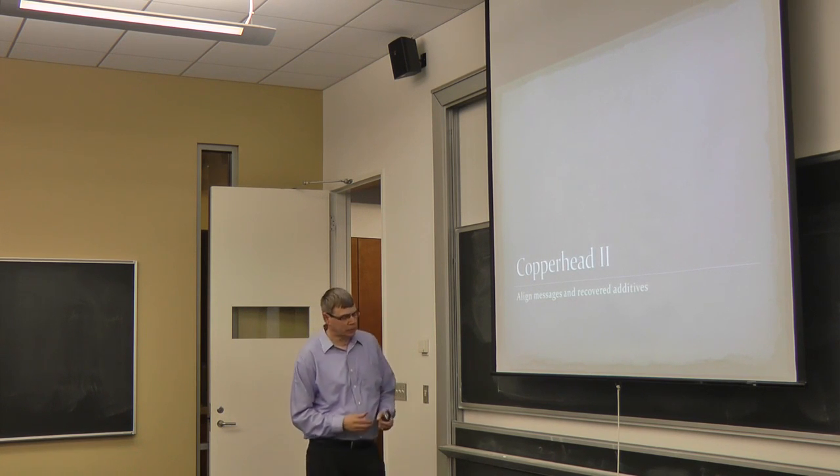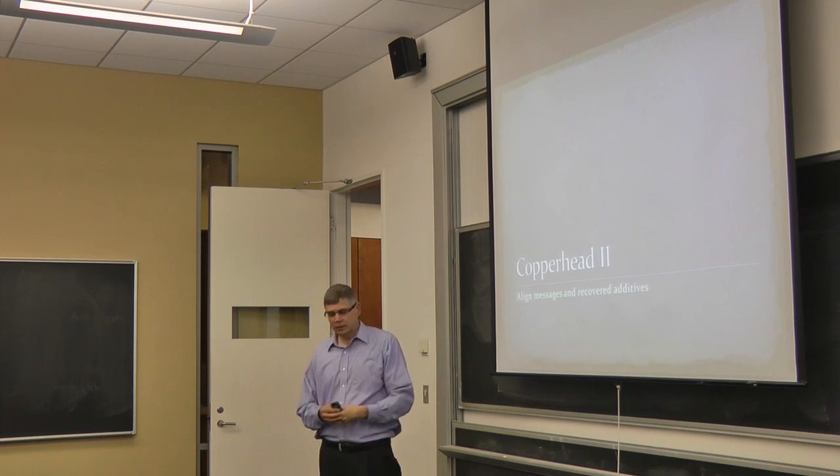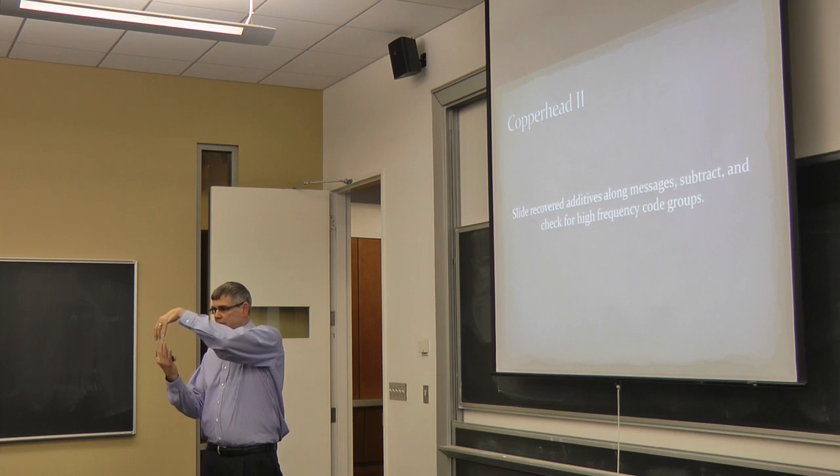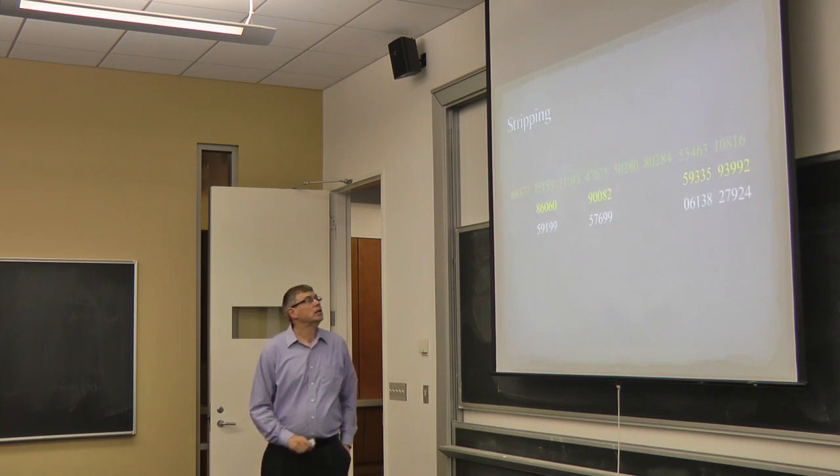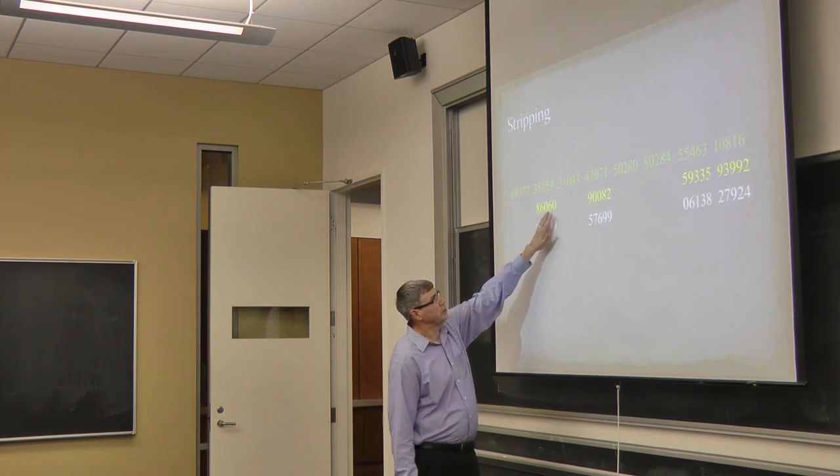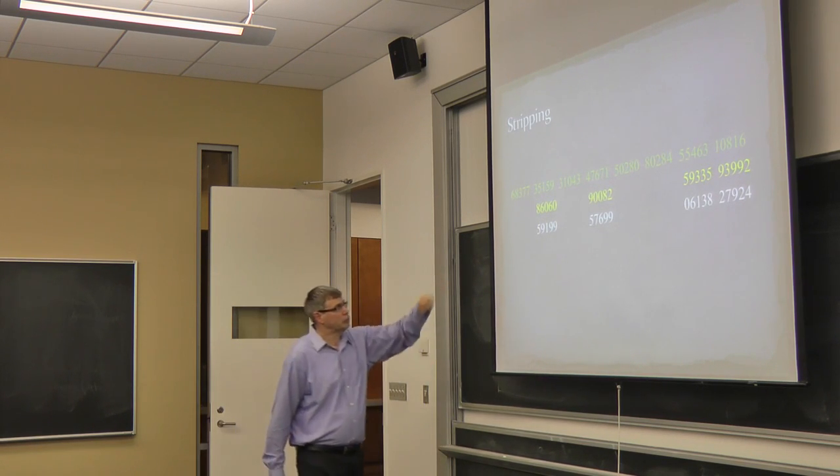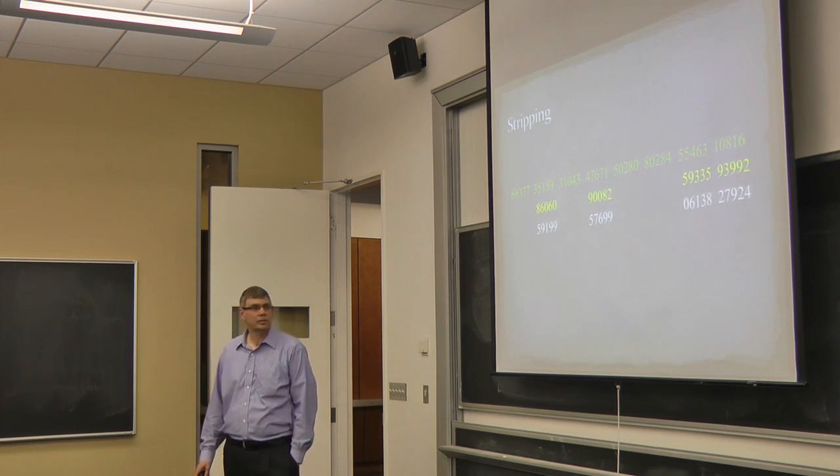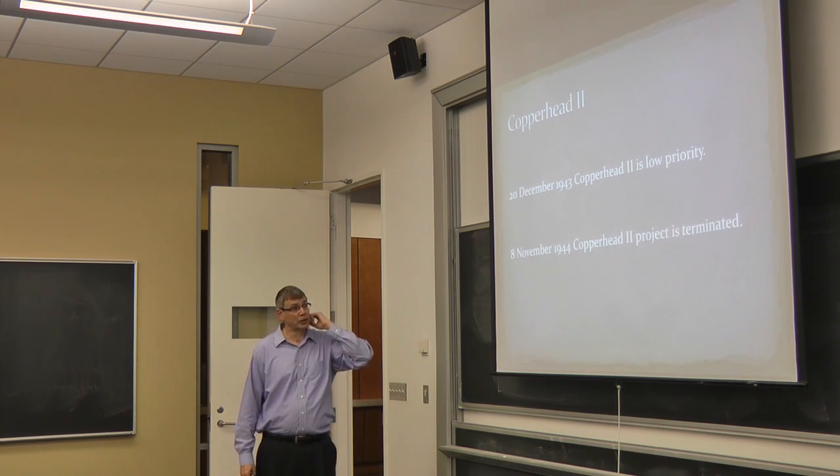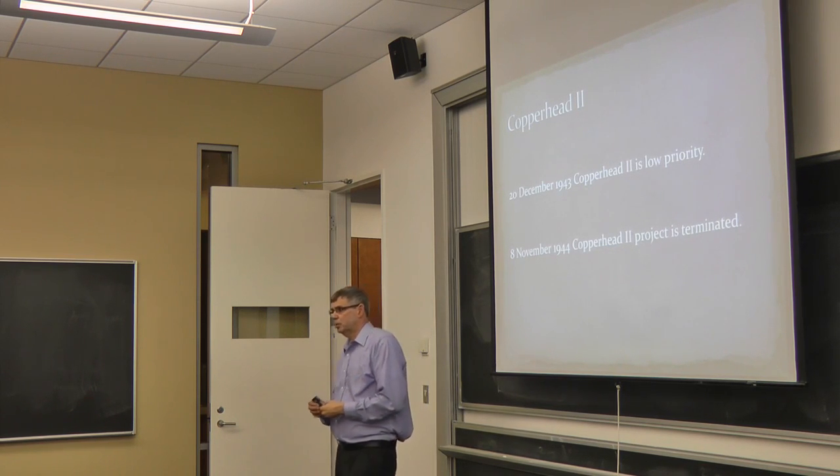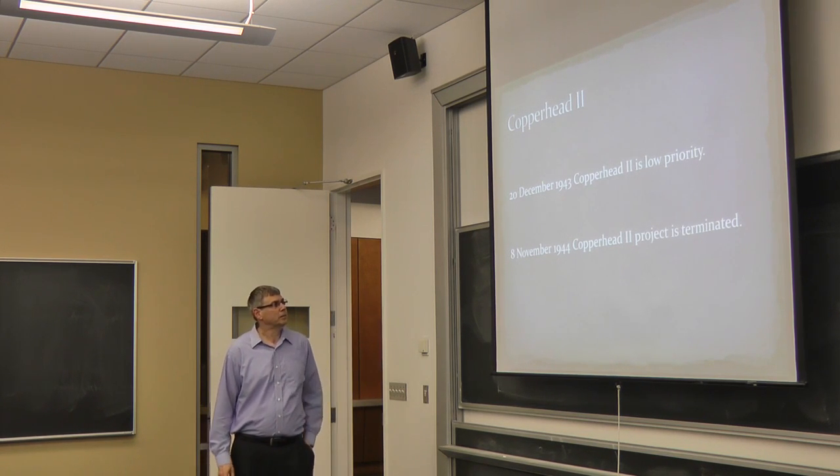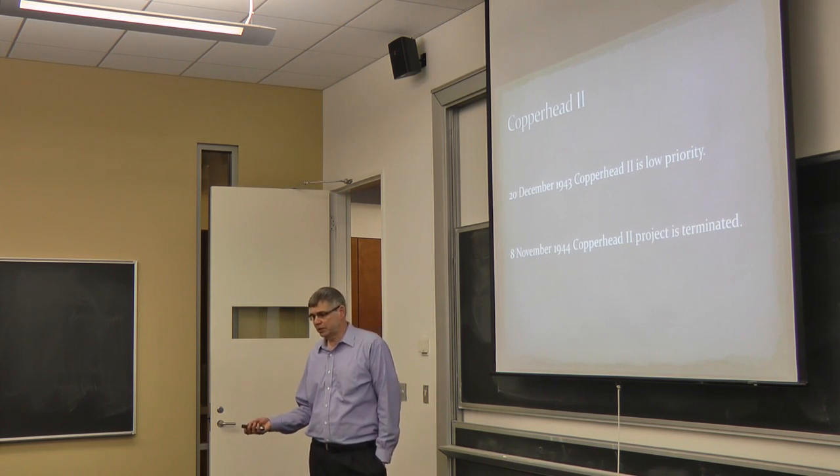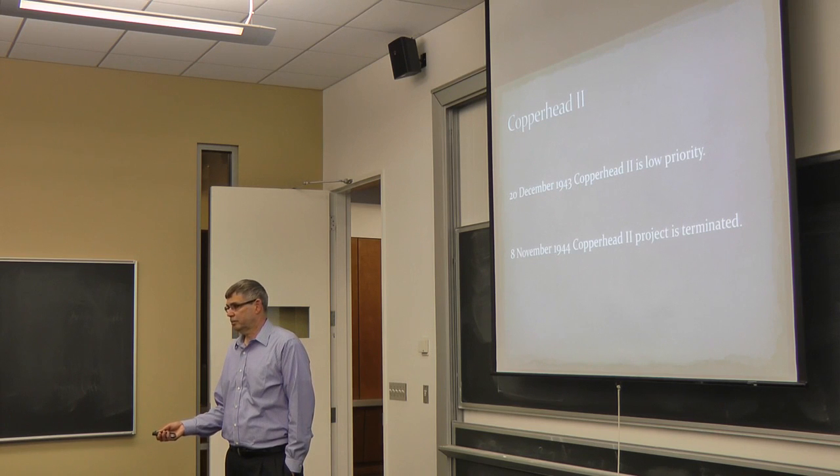Copperhead 2 was to do the other problem. Assuming you've got a message and you've recovered some additives, try to line up additives against message. The idea was to take the message, line up the additives, subtract, move to a new position, line up the additives and subtract. Here's the transmitted message. Here's a string of additives. It's not complete. We haven't recovered all of them. Here's a subtraction. Apparently, the test case was going to be how many high-frequency code groups appeared after you stripped the additives off. But then it turned out that from the very beginning it was a low priority. And I guess that makes sense because recovering additives is not one of the first things that happens when you break codes. That's later in the process. In November 1944, when Copperhead 1 is now in use, Copperhead 2 project is terminated. And there's a comment in the memorandum saying essentially nothing has been done on this, and we might as well just go ahead and terminate it.